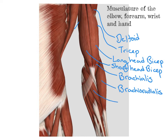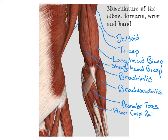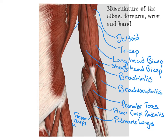The muscles of this mass include the pronator teres, which is one of our primary pronators. We have our flexor carpi radialis on the radial side, our palmaris longus in the middle, and our flexor carpi ulnaris on the ulnar side. All three of those flexor muscles cause flexion of the wrist.